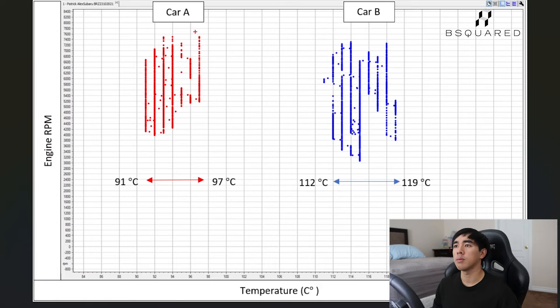As well, when you go into the higher RPMs for car A, there's less data points here meaning that the higher speed which the car was going was having a direct impact on the amount of cooling that was being experienced by the oil.